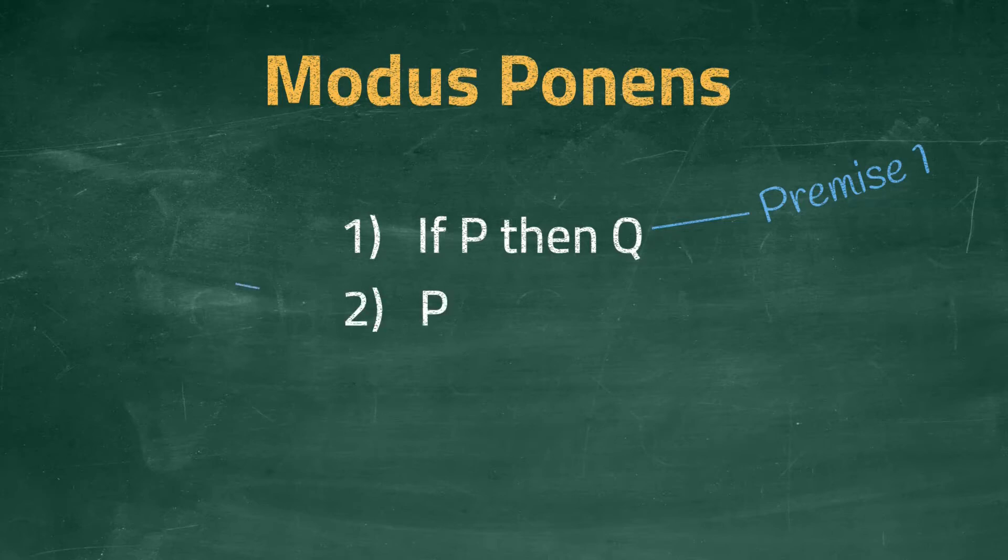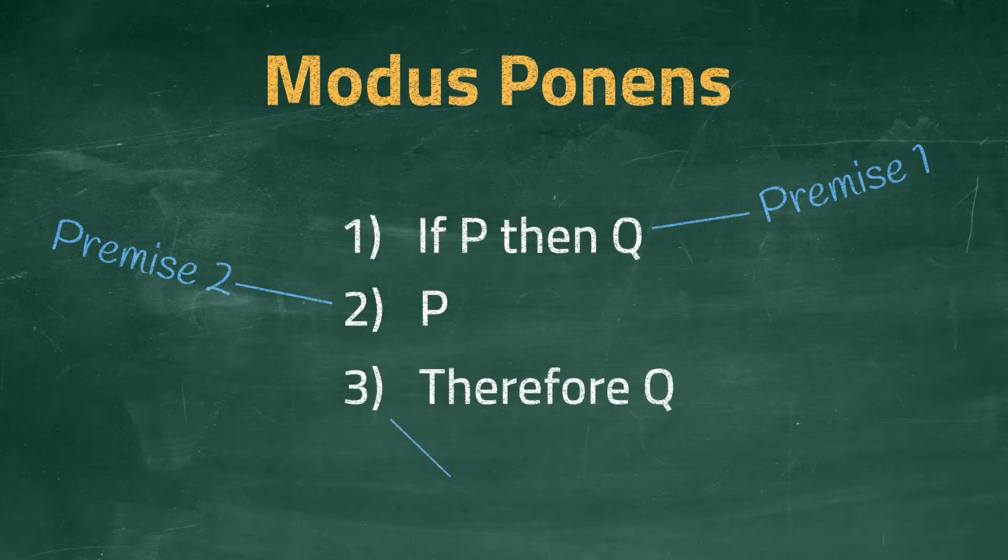The second premise. P is true. We know P is true. Again, if we assume this is correct, we can move on to the final statement. The final statement is the conclusion, therefore Q is true.